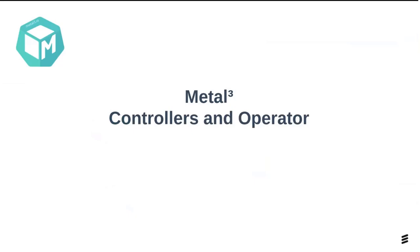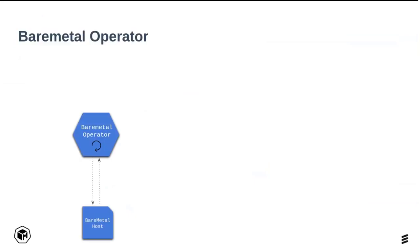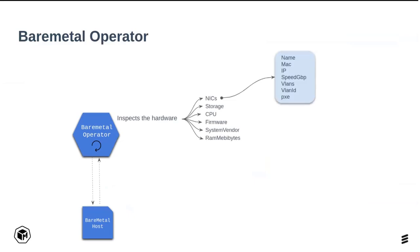Let's talk about the Bare Metal Operator and how it manages the node. The Bare Metal Operator is a controller that interacts with Bare Metal Host CRs and can perform several operations. The first is hardware inspection — it boots the node and runs the Ironic Python Agent, which goes through all the hardware specs and reports to Ironic. The Bare Metal Operator can then fetch that data, giving you information like NICs, hard drives, CPU, firmware, and many other elements from the Bare Metal Host CR.